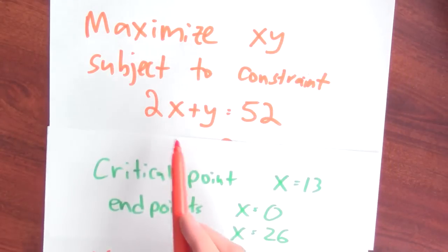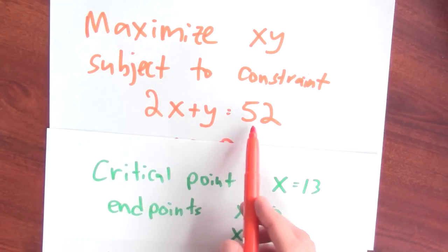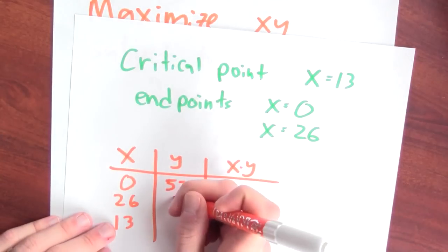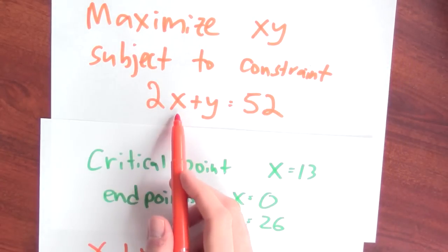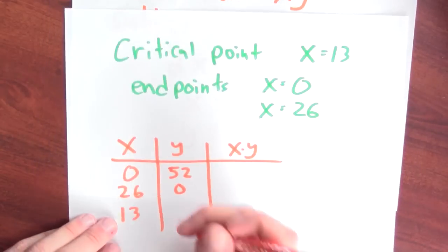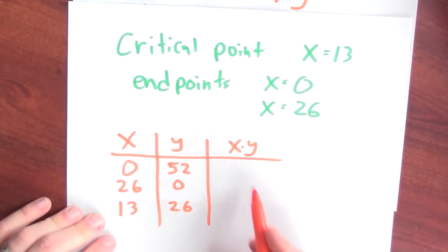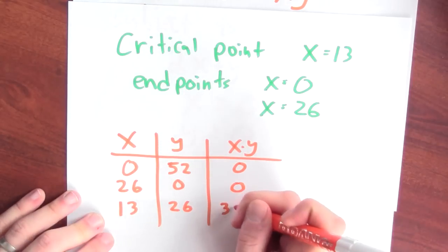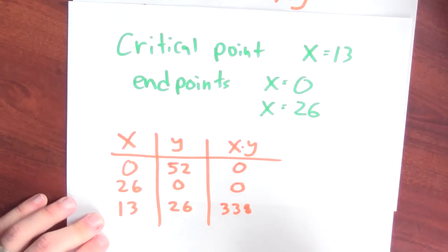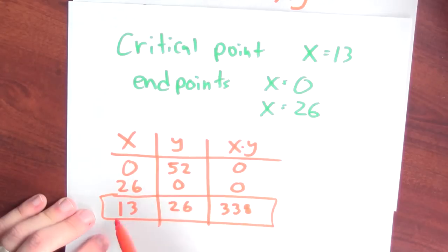And if x is 26, then 2 times 26 plus what gives me 52. Well then y is equal to 0. And if x is 13, then 2 times 13 is 26 plus what gives me 52. Well then y must be 26. Now in each of these three cases, I can figure out what the area of the resulting sheep pen would be. 0 times 52 is just 0, and 26 times 0 is also 0. 13 times 26 is 338. So here, this is the best choice for my sheep pen.